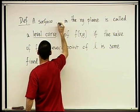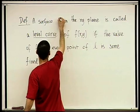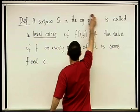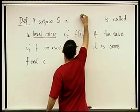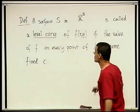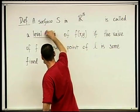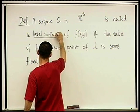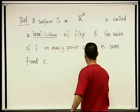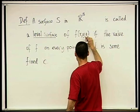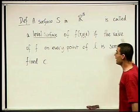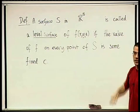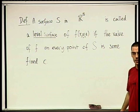The level curve was called L. Let's call it S. A surface S in R³. It's called a level surface of f of x, y, z. Now we're looking at a function of three variables. If the value of f on every point of S is some fixed constant.